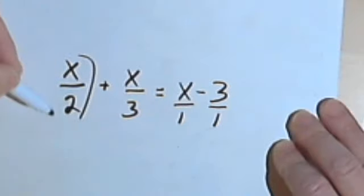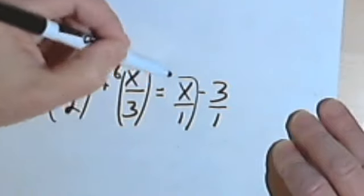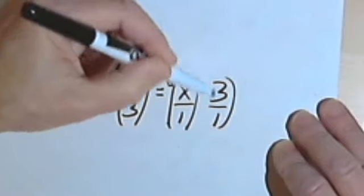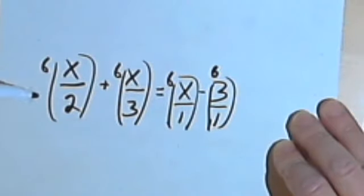I'd multiply x over 2 by 6, I'd multiply x over 3 by 6, x over 1 would be multiplied by 6, 3 over 1 would be multiplied by 6, and that's going to reduce it into something with no fractions at all.